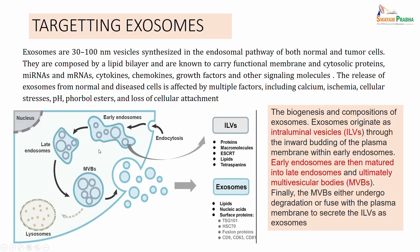The exosomes originate as intraluminal vesicles - ILVs. These ILVs may comprise proteins, macromolecules, lipids, etc. First you have the early endosomes. From early endosomes they mature as late endosomes, and from late endosomes they become multivesicular bodies. These multivesicular bodies when released from the cell are what are your exosomes. These exosomes comprise lipids, nucleic acids, and surface proteins. The formation of exosomes is a normal phenomenon in both normal as well as tumor cells.